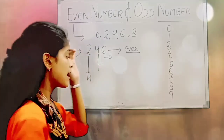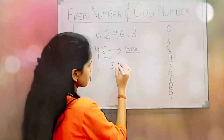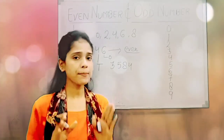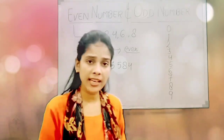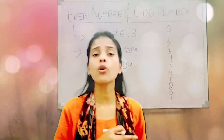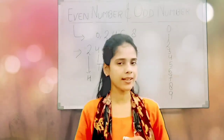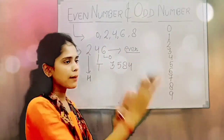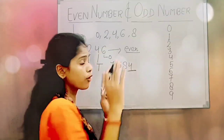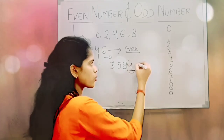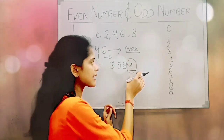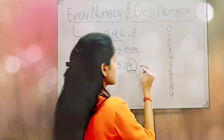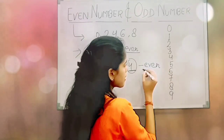For example, 3584 — is this even or not? Kisi bhi number mein agar ones ki place pe 0, 2, 4, 6, ya 8 ho, then that number will be considered as even. Toh aap dekho, isme ones ki place pe kya likha hai? 4. Aur 4 even number hai. So this number will be considered as even number.